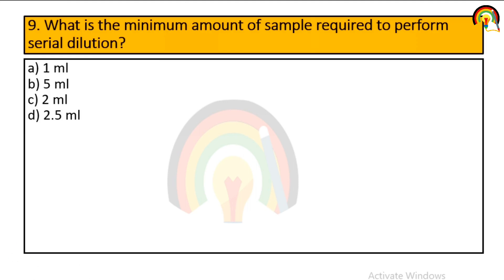What is the minimum amount of sample required to perform serial dilution? Serial dilution is a kind of stepwise dilution process. The options are 1 ml, 5 ml, 2 ml, or 2.5 ml. The minimum amount of sample required to perform serial dilution is 1 ml.